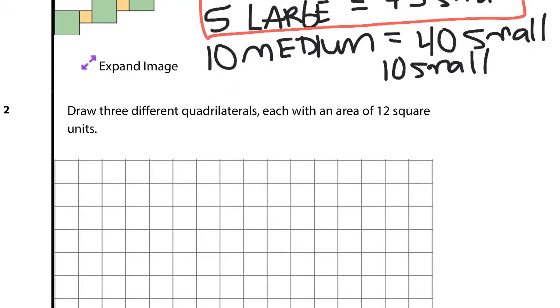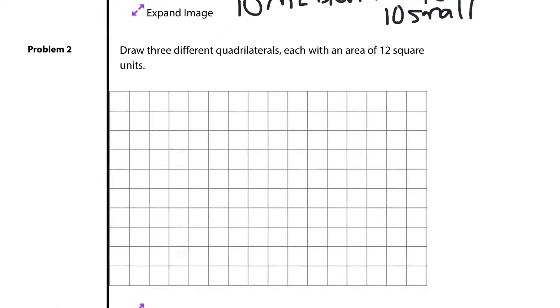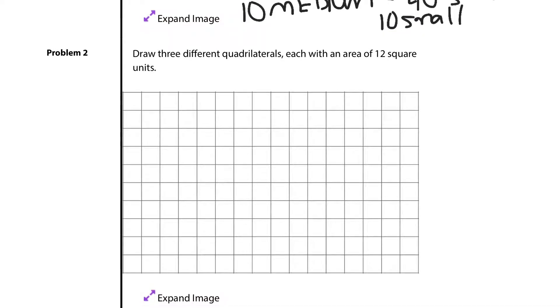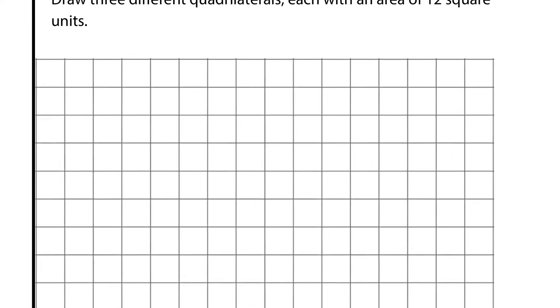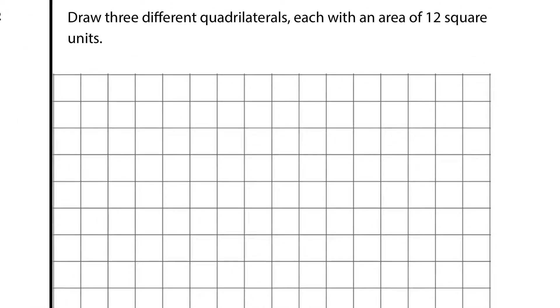Let's move on to question 2. Draw 3 different quadrilaterals, each with an area of 12 square units. All right. Well, let's think about this for just a moment here. If I start off by coming down 3 units and out 4 units. This is a 4 by 3 rectangle, which is a quadrilateral, and sure enough, counting up to 12 square units.